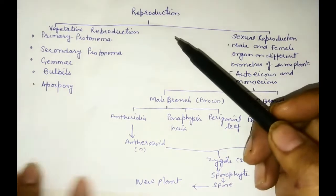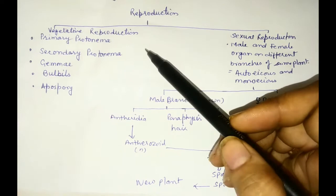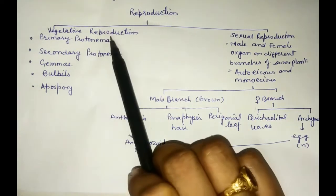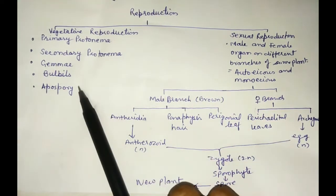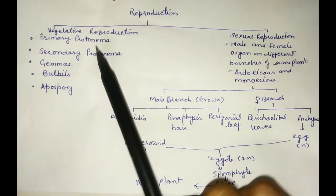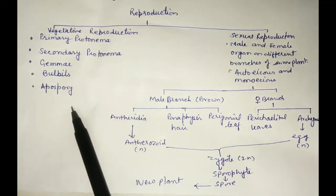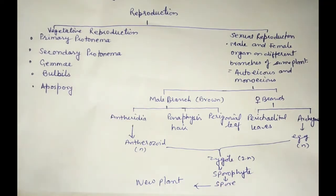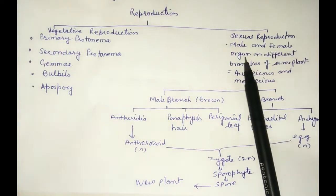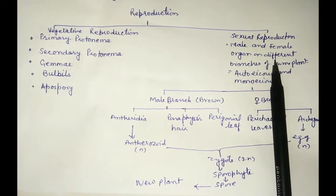Last time we learned about the reproduction of Funaria. We studied vegetative reproduction with the help of primary protonema, secondary protonema, hygema, bulbils, and apospory. After this, we studied sexual reproduction and the male and female organs.